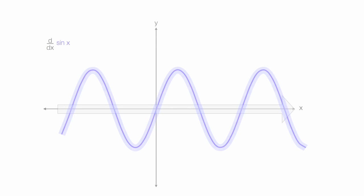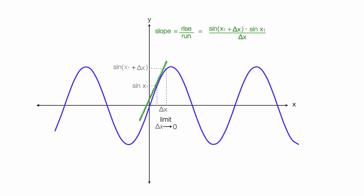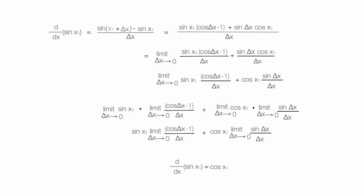In this tutorial, I'm going to show you how to prove that the derivative of the sine function is the cosine function. I'm also going to show you how the sine function changes as x changes, how the slope of the tangent line is the derivative. I'll walk you through that. And here's the final proof — it looks a lot worse than it is.